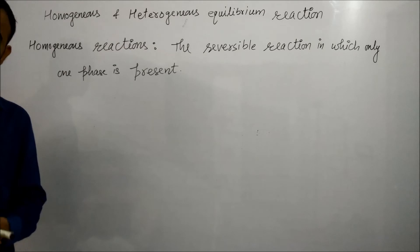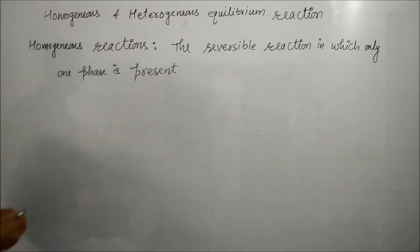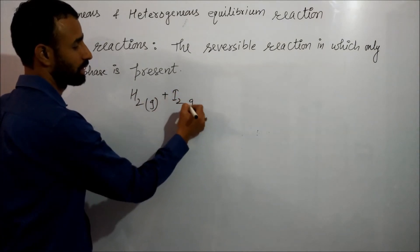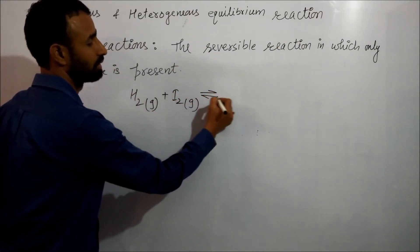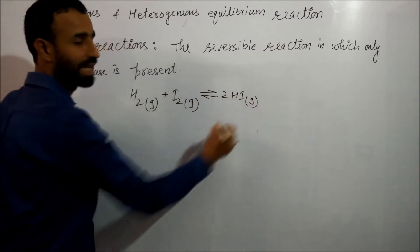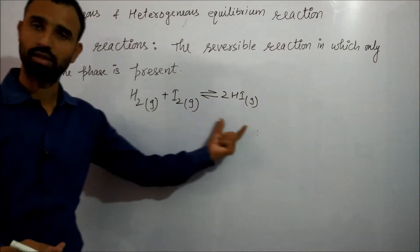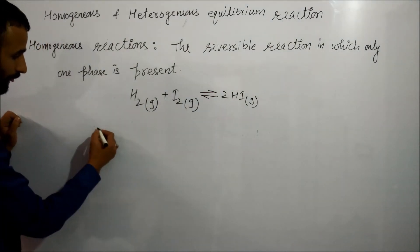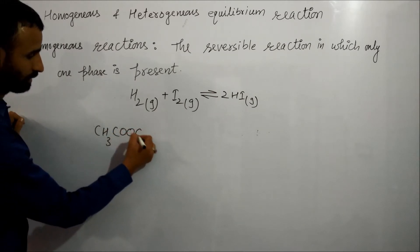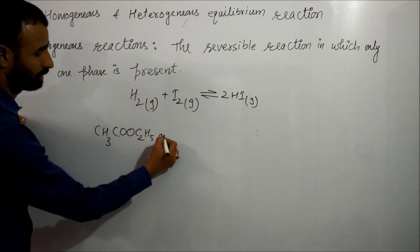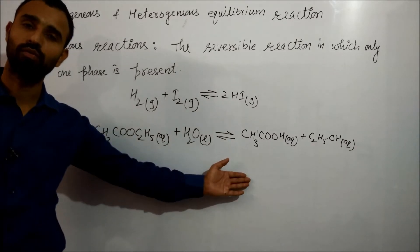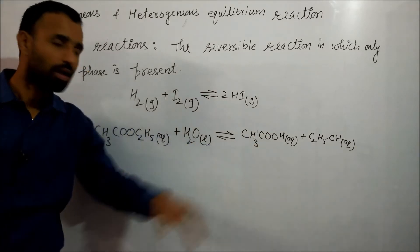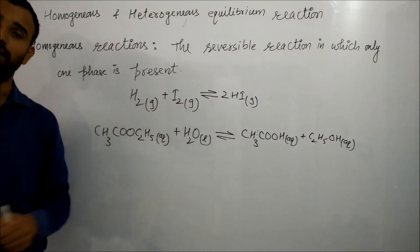Homogeneous equilibrium — these are the reversible reactions in which only one phase is present. For example, H₂ (gas) plus I₂ (gas) gives 2HI (gas). Gases form a homogeneous mixture. Another example is ethyl acetate, which is also an example of homogeneous equilibrium because all components are soluble in water.